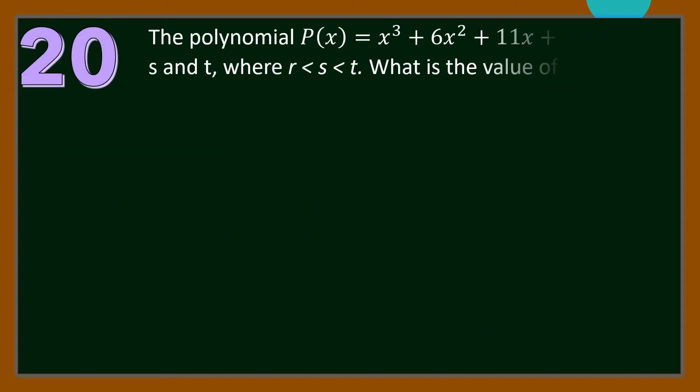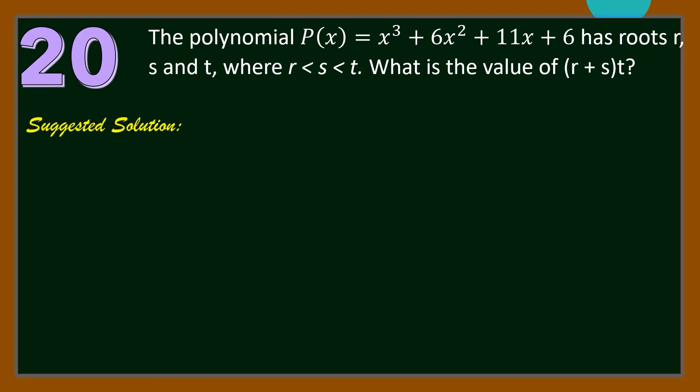Number 20. The polynomial P(x) = x³ + 6x² + 11x + 6 has roots r, s, and t, where s > r but s < t. What is the value of (r + s) · t? For our solution, let us get the roots of the given polynomial using synthetic division.